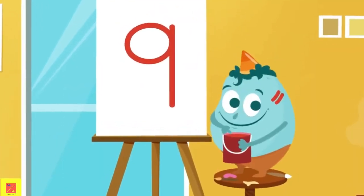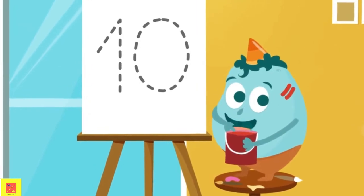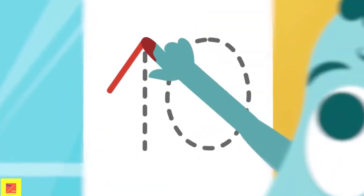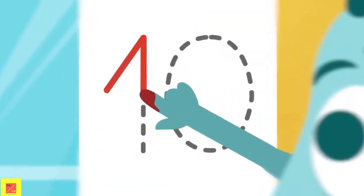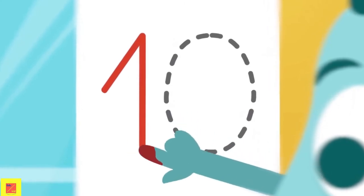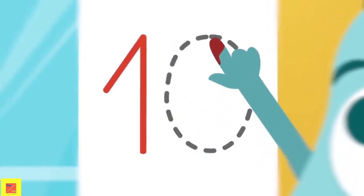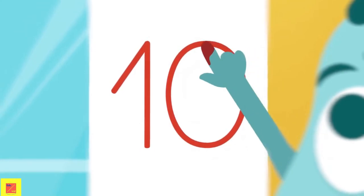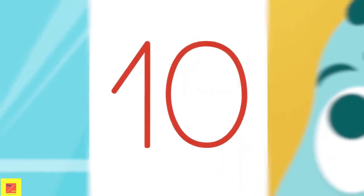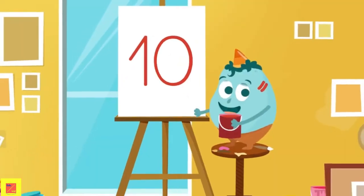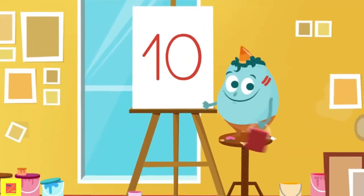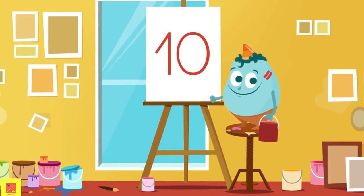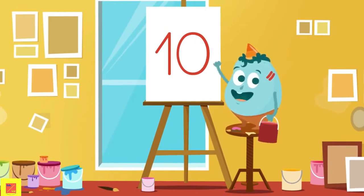Very good! And for the last one, we make a 1 like we did before, but then we add a 0 to the right. We start here and we make a circle. What number is this? Number 10! Very good! Yay! Well done! Now you can write the numbers! See you later!